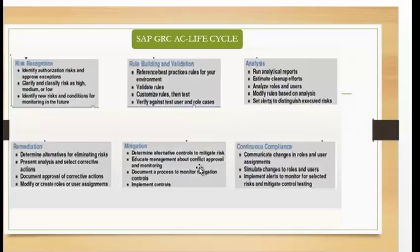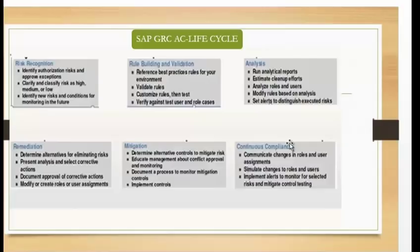Finally, the continuous compliance phase brings everything together — risk recognized, rules built, analysis done, risks remediated or mitigated. This phase communicates changes in roles and user assignments, simulates changes to roles and users, and uses the Access Control software (RAR) to monitor ongoing risks, conduct effective testing, and maintain control.